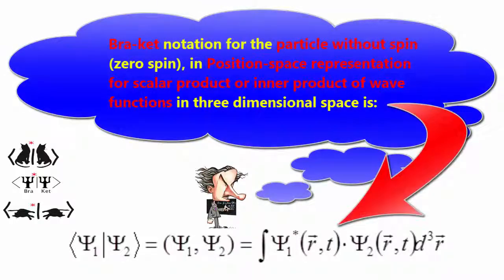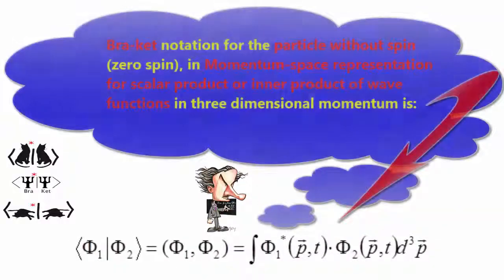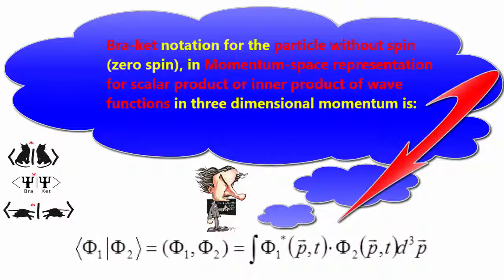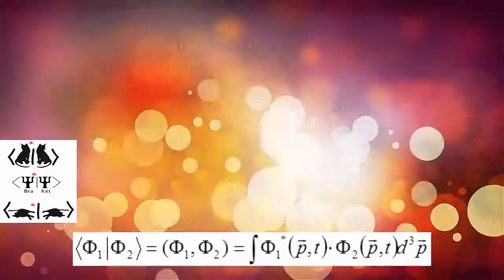For a particle without spin, the bracket notation in position space representation for the scalar product or inner product of wave functions in three dimensional space is: ⟨ψ1|ψ2⟩ equals the integration of psi star 1 times psi 2 over position space. In momentum space representation, the scalar product or inner product ⟨φ1|φ2⟩ equals the integration of phi star 1 times phi 2 over momentum space.